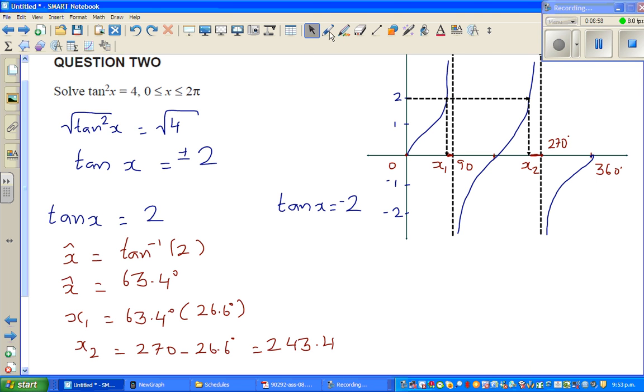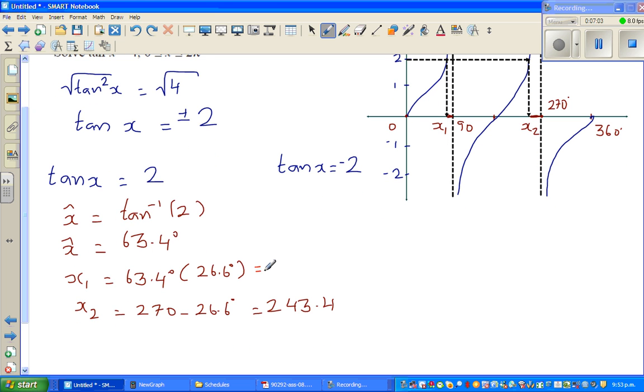So now before I forget, let me change this into radians. So this is nothing but 63.4π over 180. You can leave this as the answer, this is good enough. Or you can use a calculator to figure this out. And this is same as 243.4π over 180. These are x1 and x2.